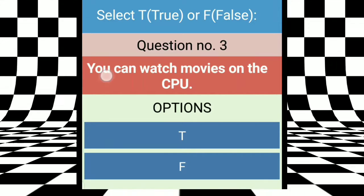Now, the question number 3 is, you can watch movies on the CPU. Means, you can watch, aap watch kar sakti hai, movies ko on the CPU. Can you watch movies on the CPU? No. CPU does not have any screen. CPU is only a box. We cannot watch anything on that. We can watch the movies on the computer monitor, screen. So, this is false.